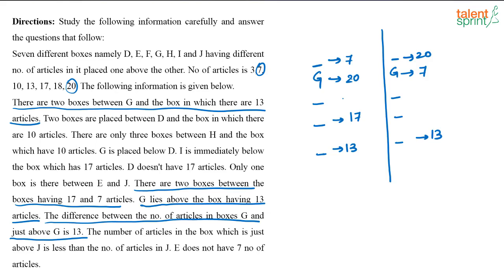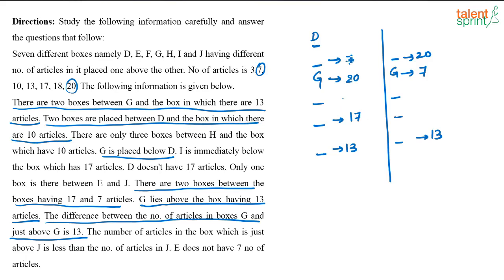The next clue says G is placed below D, meaning D is above G. It is also given that two boxes are placed between D and the box which has 10 articles. If D is at a certain position, then with two boxes in between, that position must contain 10 articles.